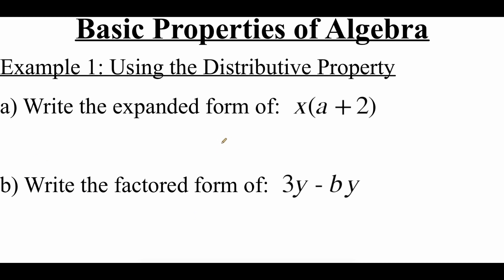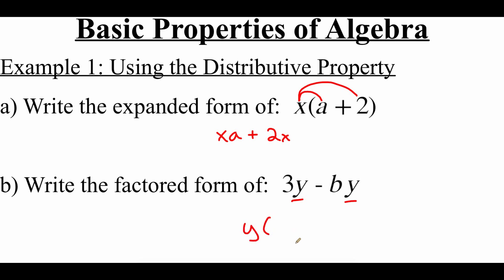Now we'll look at using the distributive property a couple of different ways. In part a, we write the expanded form of x times (a plus 2). Using the distributive property, we multiply x by a to get x times a, then x by 2 to get 2x, keeping the addition: xa plus 2x. For the factored form, we work backwards — looking for something both terms have in common, specifically the y value. We take y out of both terms and put what's left in parentheses: if we take y out of the first term we get 3, minus, taking y out of the second term leaves b — giving us y times (3 minus b).